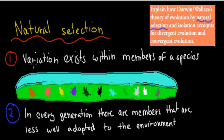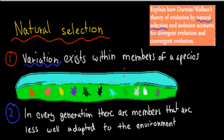First, there are variations that exist within members of a species. Not all members of a species look alike — for example, with humans, some might have darker skin, some lighter skin, brown eyes, blue eyes, green eyes, different shaped ears or noses. There's always a bit of variation within any species.